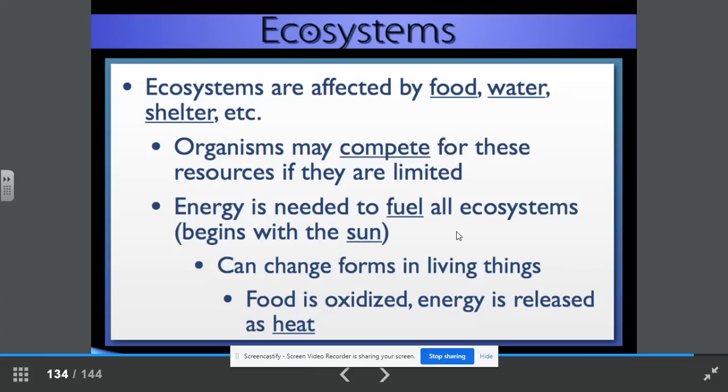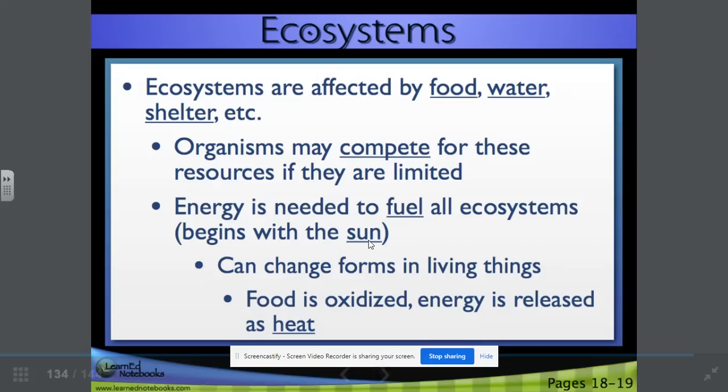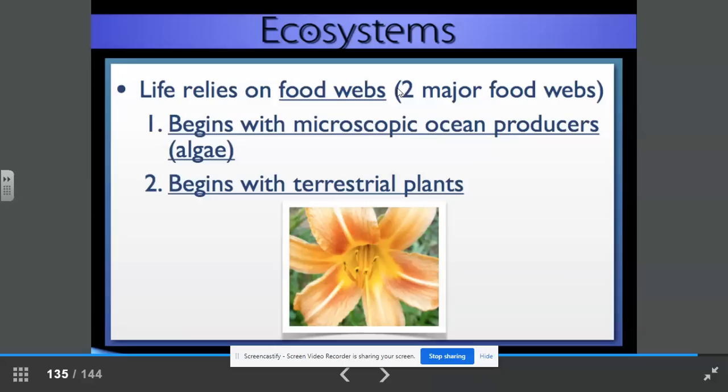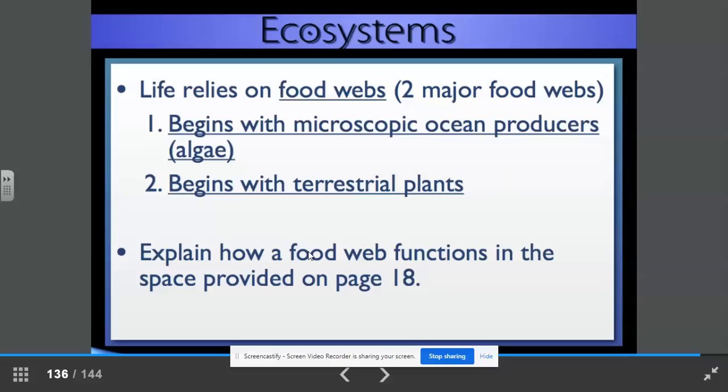Energy is needed to fuel all ecosystems. And everything we've learned this year, everything goes back to the sun. We can trace every single bit of energy or food web or food chain back to the sun. This can change forms in living things. Energy can change forms in living things. And food is oxidized. Energy is released as heat. Life relies on food webs. There are two major food webs. They begin with microscopic ocean producers, which we know to be algae. And on land, it begins with terrestrial plants. So aquatic food webs, terrestrial food webs. Explain how a food web functions in the space provided on page 18.